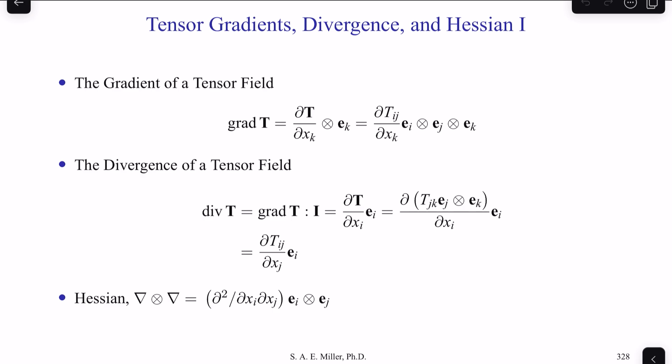Let's talk about the gradients, divergence, and Hessian of tensor calculus. The gradient of tensor field T can be written as grad T = ∂T/∂x_k ⊗ e_k = ∂T_ij/∂x_k e_i e_j e_k. The divergence can similarly be written as div T, which is the gradient of T dotted with the identity tensor, giving ∂T_ij/∂x_j e_i in index notation.